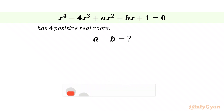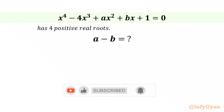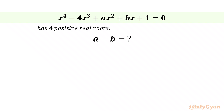Hello my dear friends, welcome back to InfiJaan. Today in this video, we are going to solve another very interesting and challenging question from algebra. Here we have to evaluate A minus B, if x⁴ minus 4x³ plus ax² plus bx plus 1 equals 0 is a known equation having four positive real roots. So let us get started by considering the required expression equal to E.